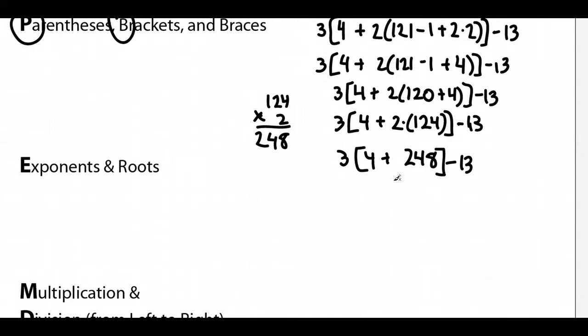Still in our brackets. We do 4 plus 248, which is 252. I'm going to keep this in brackets, even though we're done with it in there, because the 3 next to the brackets means that we multiply.